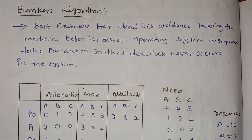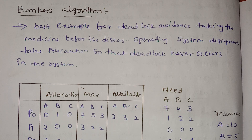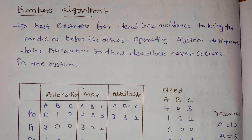For example, if you have 3 medicines, because of a disease, you take precautions. Similarly, operating system designers ensure deadlock never occurs — this is the concept behind deadlock avoidance.